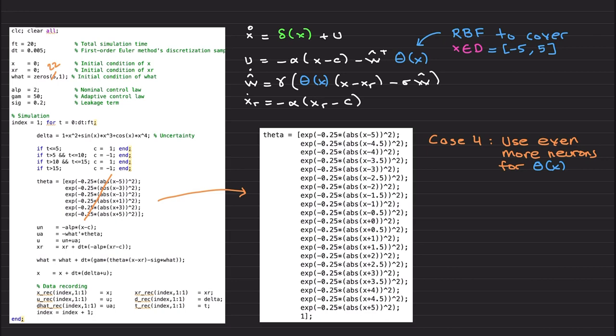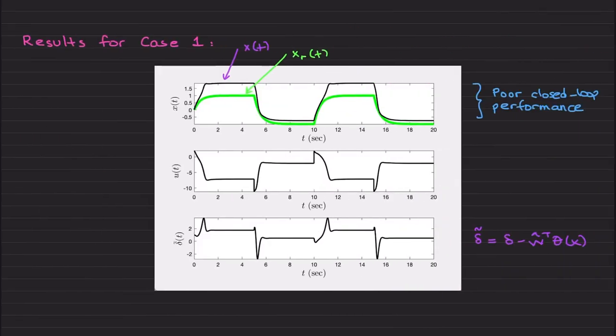Now we are ready to discuss the simulation results. Results for case one: this is the state, this is the reference model state, this is the control signal. And here I wanted to plot delta tilde. What is delta tilde? It is the original delta plus the neural network approximation. So we would like to make it smaller. Now for case one, we were just including six neurons and the closed-loop system performance is not great. So as you see here, we deviate.